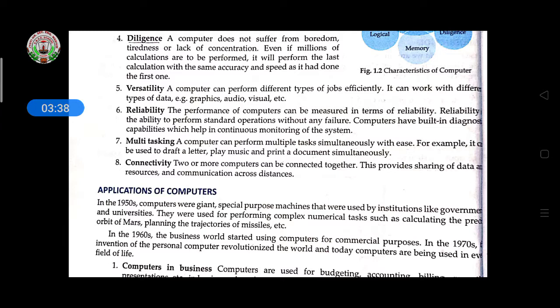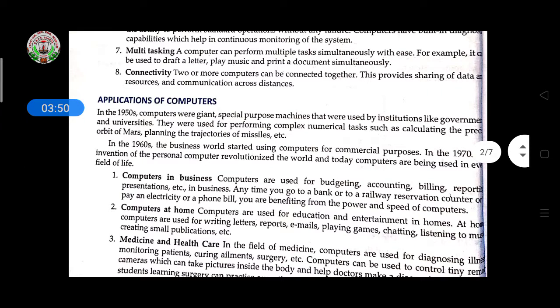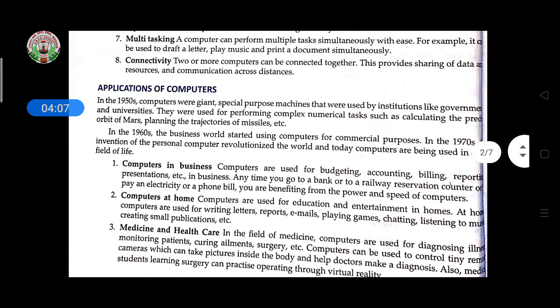Reliability means the performance of computer can be measured in terms of reliability. It performs standard operations without any failure. Multitasking - computer can perform multiple tasks simultaneously with ease. Connectivity - two or more computers can be connected together to share resources and data.